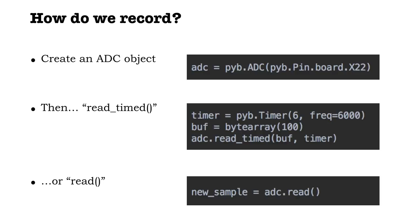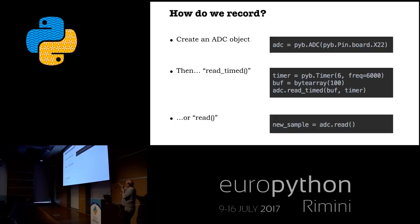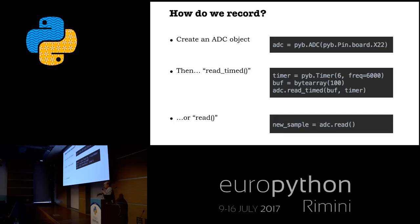So how do we record on the Pyboard? We basically create an ADC object, and then we can use one of two read methods: read-timed or just read. After importing the Pyboard module, we create our ADC object on a particular pin — pin X22. Once done, you can hand the process of capturing samples over to MicroPython and it will read a block of data at a frequency you dictate, such as 6,000 samples per second. But you've got no control over the real-time aspect — it captures and you have to wait until it's finished. So for a continuous interactive device, that's not the best approach.